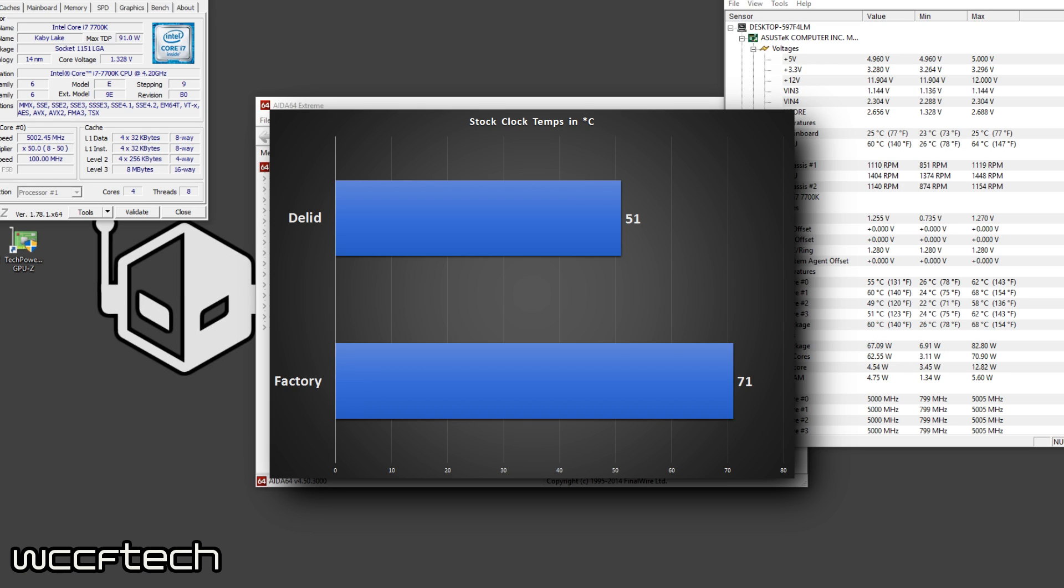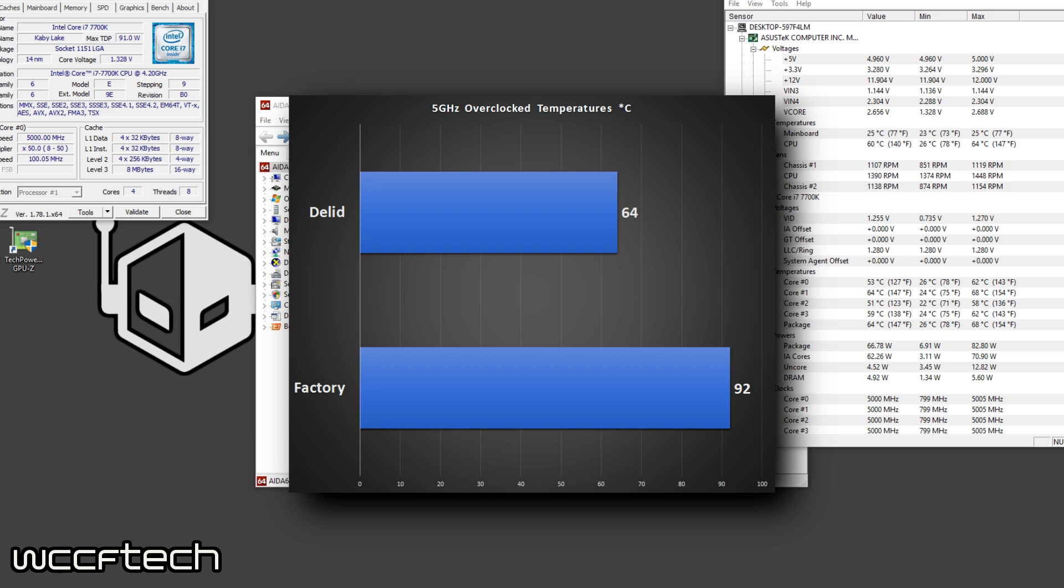So under the non-delid we got 71 degrees Celsius which is pretty toasty for a 280mm rad on stock at 4.5. Now moving over to the delid, we ended up with 51°C, so straight up 20 degrees Celsius drop. Now moving over to overclocked with pre-delid, we had 92 degrees Celsius which there was the occasional spike that jumped up to 97 on one of the cores. But we never really saw thermal throttling with the side panels off, but everything closed up there was the occasional throttle at five.